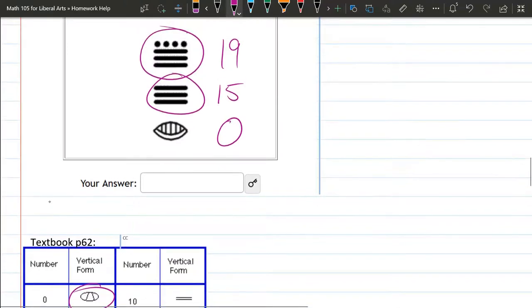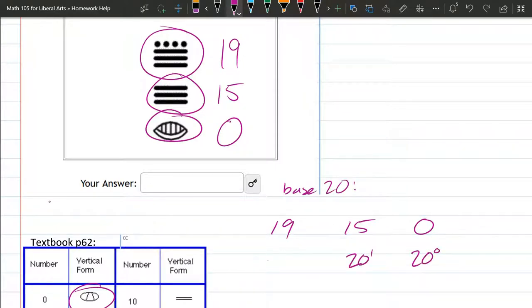We got all three numbers written out here. We have 19, 15, and zero. This is in base 20, so that means this is 20 to the zero power, 20 to the first, 20 squared.